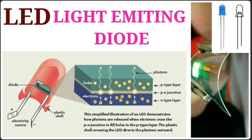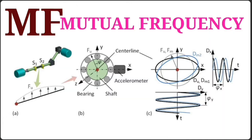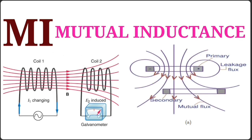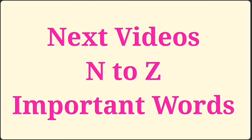MCU – Microcontroller. MF – Medium Frequency. MI – Mutual Inductance. MMF – Magnetomotive Force. Next video continues N to Z important electrical words.